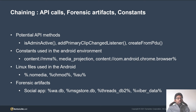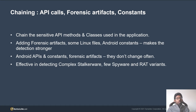This slide contains some of the sensitive and commonly used methods, constants and artifacts found in stalkerware applications. addPrimaryClipChangedListener is used for clipboard access, MediaProjection for screen capturing, and .nomedia is usually used in spy cams. For forensic artifacts, we have database names of WhatsApp, Facebook and Viber. We can combine some of them for detection. When using DB names, use wildcards because implementations are usually like /data/data/com.whatsapp/<wildpath>. Including sensitive method names, class names, forensic artifacts, Linux files and constants used in the application would make detection stronger.